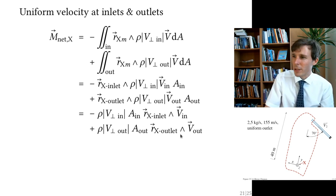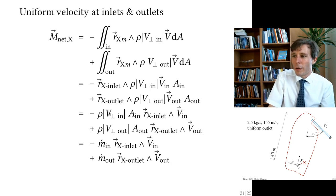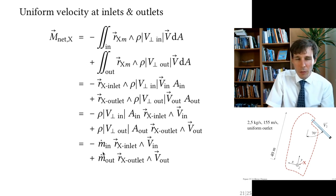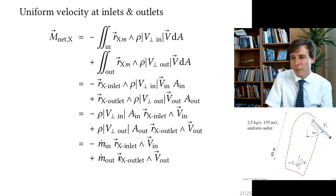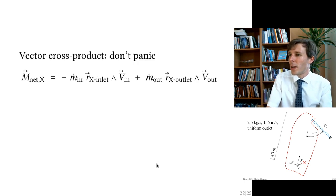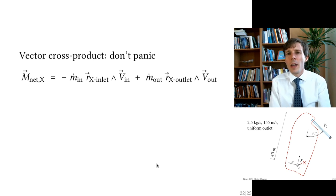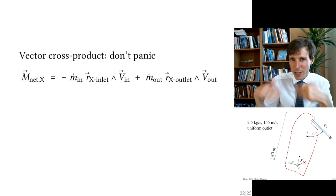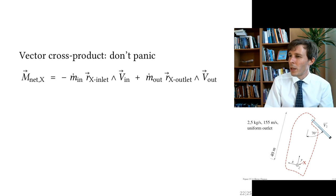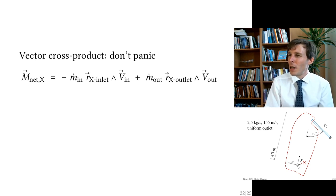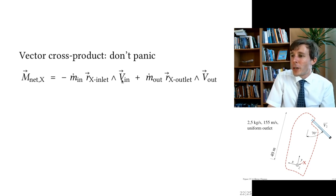Since ρ·v_⊥·A equals the mass flow rate ṁ, we substitute that in — both numbers are positive, with a minus for the inlet and plus for the outlet. Now comes the difficult part: evaluating the cross products. Instead of taking the full cross product of r and v_n, we use a shortcut.